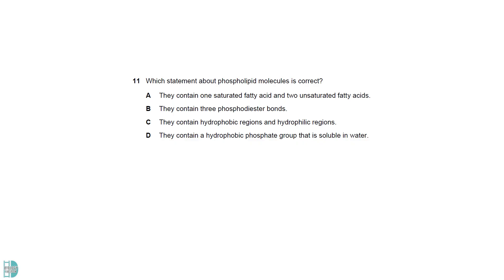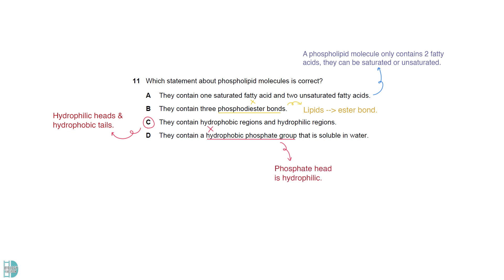A is wrong because it only contains 2 fatty acids. They can be saturated or unsaturated. B is wrong because the bond found in phospholipids is the ester bond. C is correct. They have hydrophilic heads and hydrophobic tails. D is wrong as the phosphate head is hydrophilic.